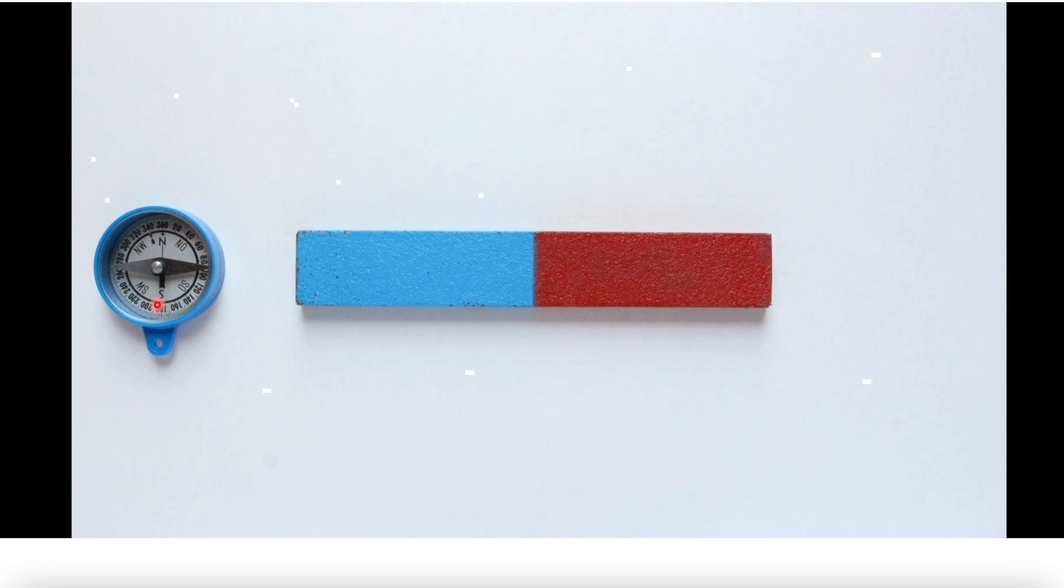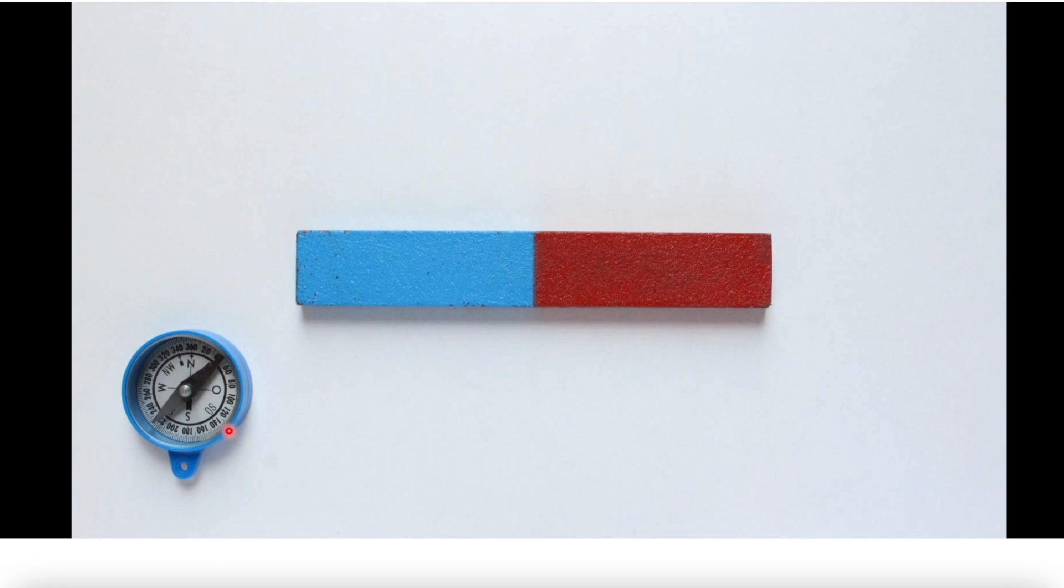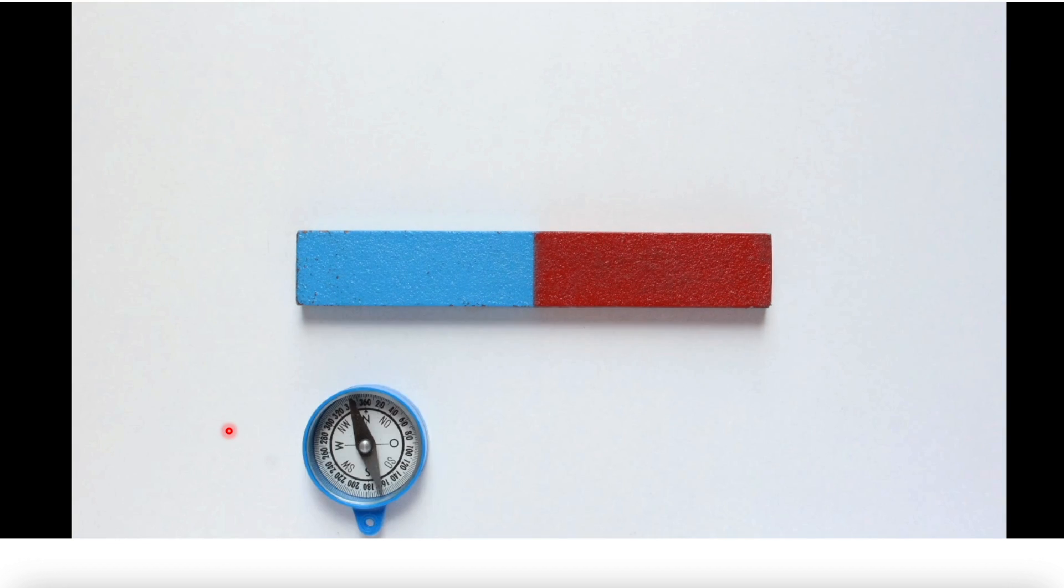Place the compass at one pole of the magnet and make a dot next to it showing the direction the compass arrow points. Move the compass so that the base of the arrow is at the dot you just made.